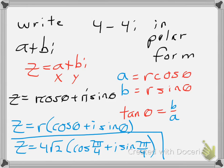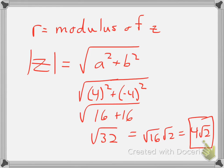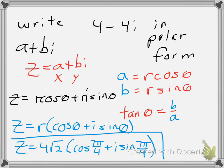So to find any polar form, I need to identify my r by finding the modulus of the complex number. I need to find theta, which I can use by adapting my equation for tangent, and I put it in the proper form.